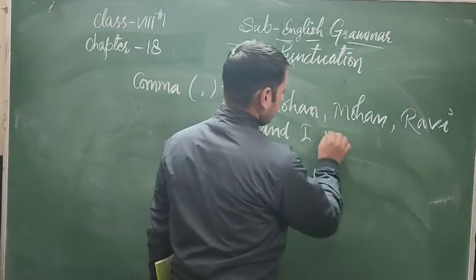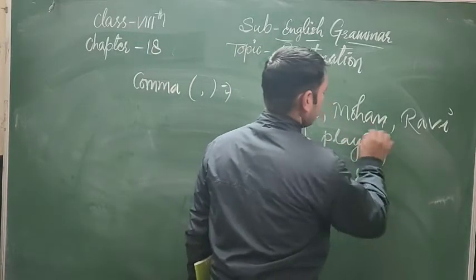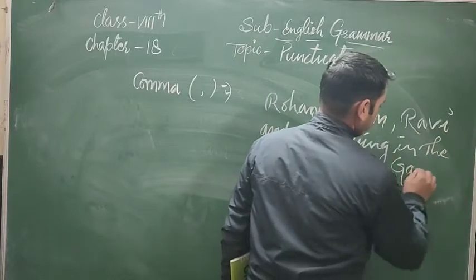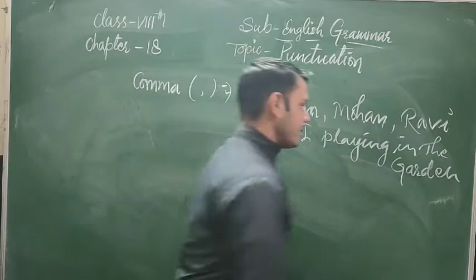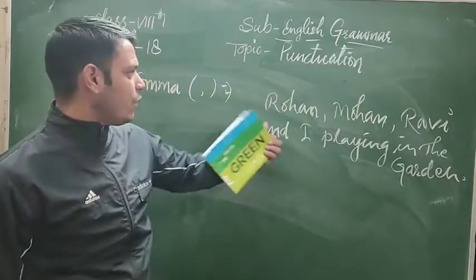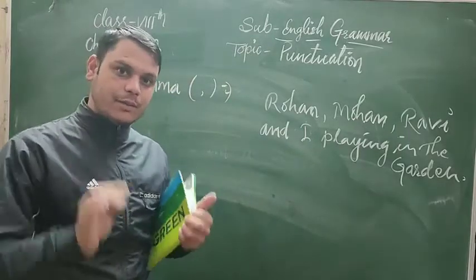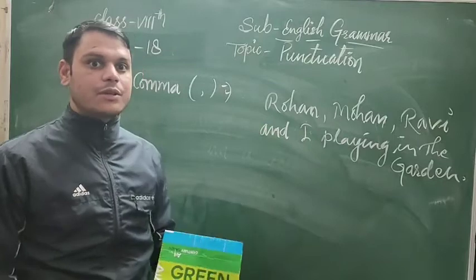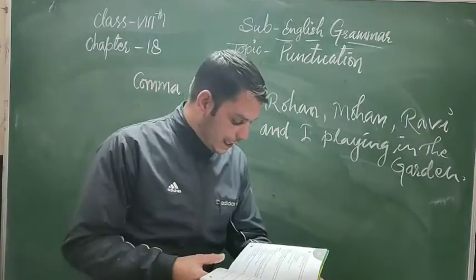So in this way, we can use comma in a sentence. For example: 'Rohan, Mohan, Ravi and I are playing in the garden.' Note that 'I' — the first person — is always placed last when listing people in this kind of sentence.